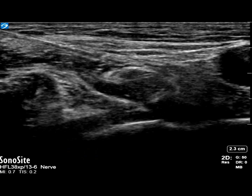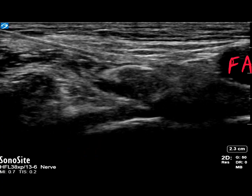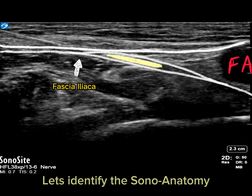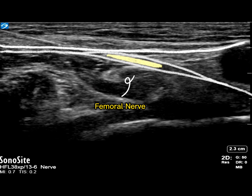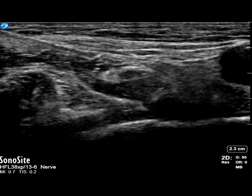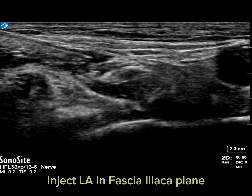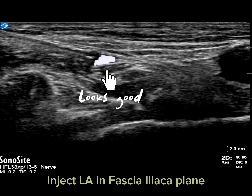Let's identify the relevant sonoanatomy. Identify the femoral artery and the fascia iliaca, which encloses the femoral nerve, as shown. We inject a small amount of local anesthetic to identify the spread.